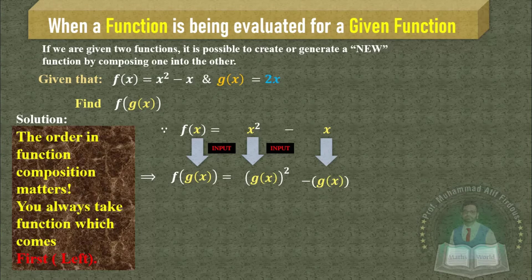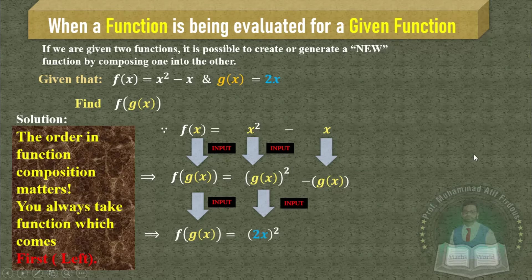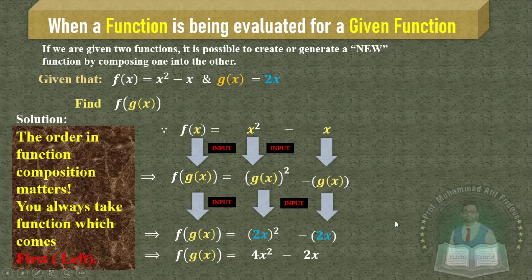The next step is to replace the value of g(x) = 2x, which is its original value. Replacing g(x) by 2x on the right-hand side, we get (2x)² - 2x = 4x² - 2x, which is called the composition of function.